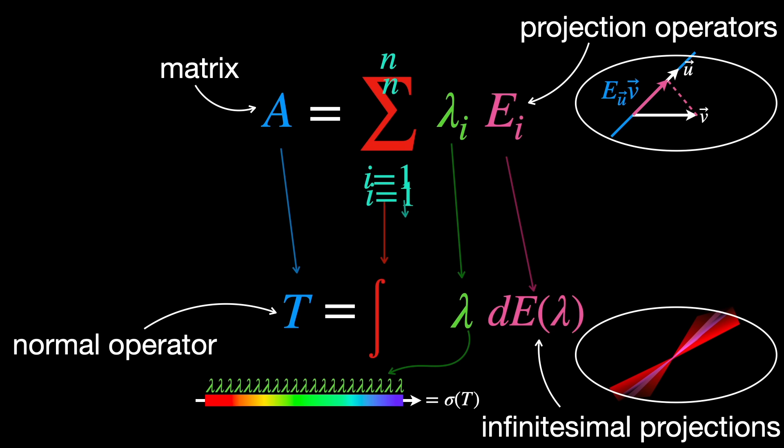And the finite index range i equals 1, 2, and so on up to N, with the entire spectrum sigma of the operator T.